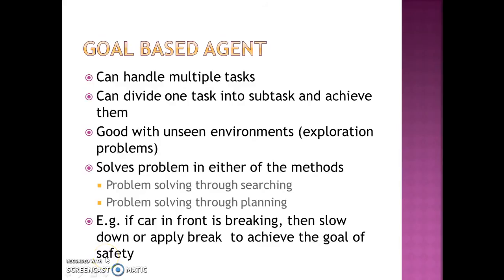If you compare this with a reflex-based or model-based reflex agent, in that case even if the car is far away, the agent will apply the brakes as the condition is simply: car in front is braking, then apply brakes. In the goal-based case, it will analyse how the world evolves — how cars move, their general speeds in traffic or on freeways — and accordingly decide whether to just slow down or apply the brake to achieve the goal of safety. The goal here is not merely to apply the brake when the car in front is braking. This is how it differs from reflex-based agents.